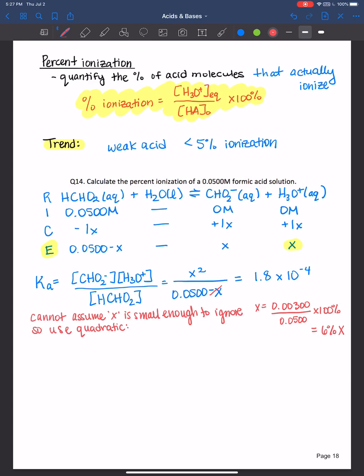All right, so let's go back here. So x squared over 0.0500 - x is equal to 1.8 × 10⁻⁴. Remember with the quadratic we're trying to get to the form ax² + bx + c = 0. So if you rearrange this equation to get it in the quadratic form...